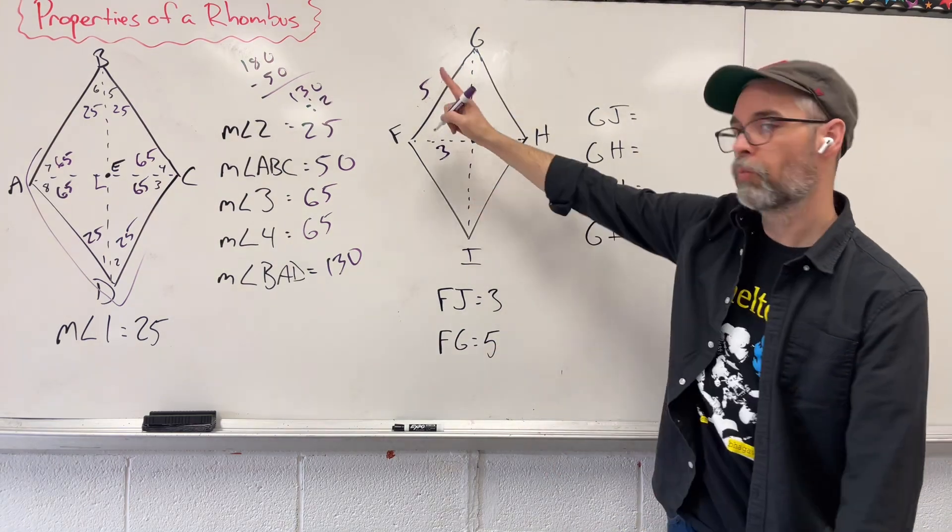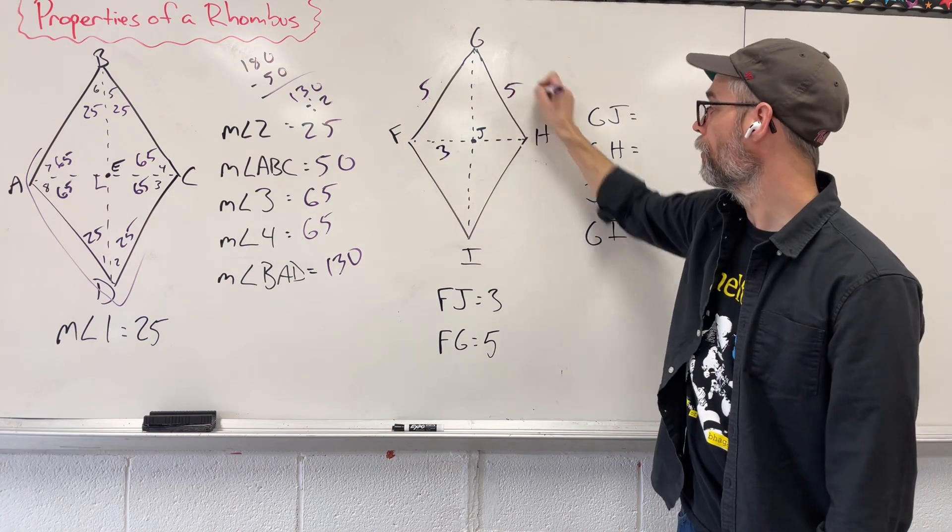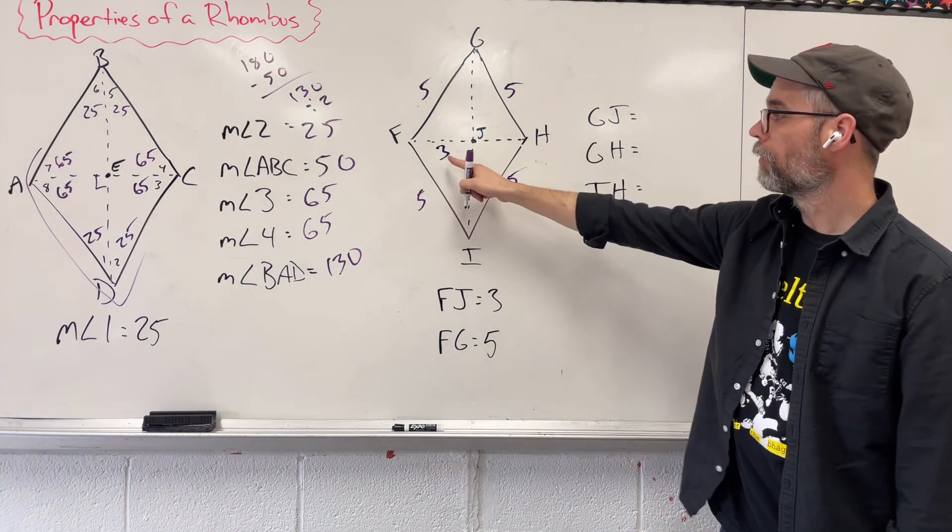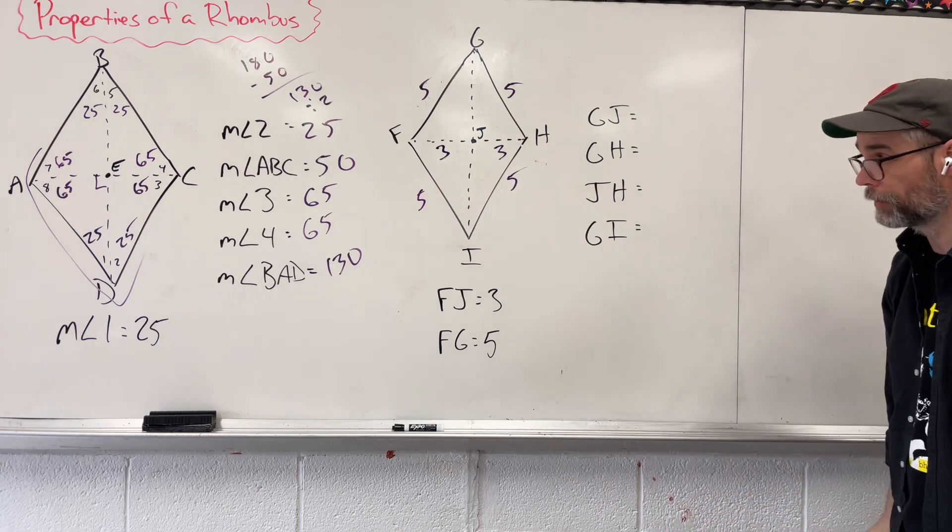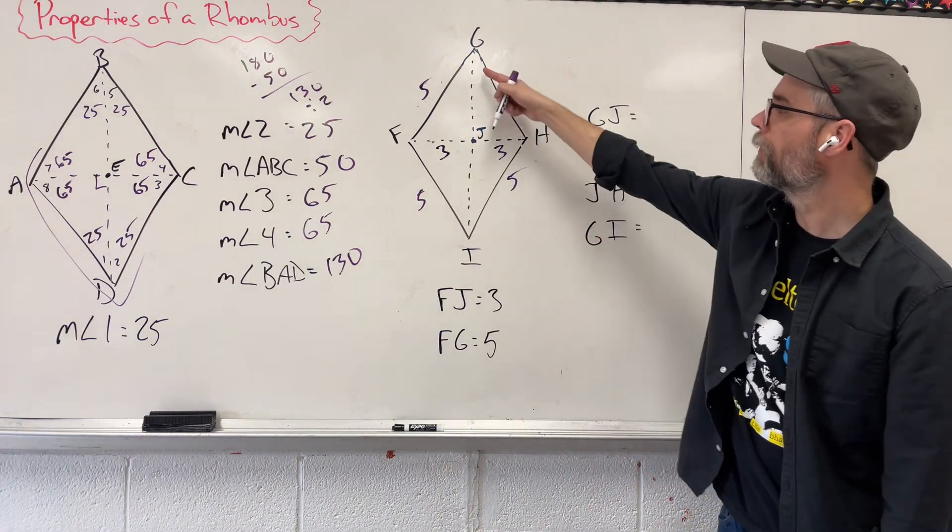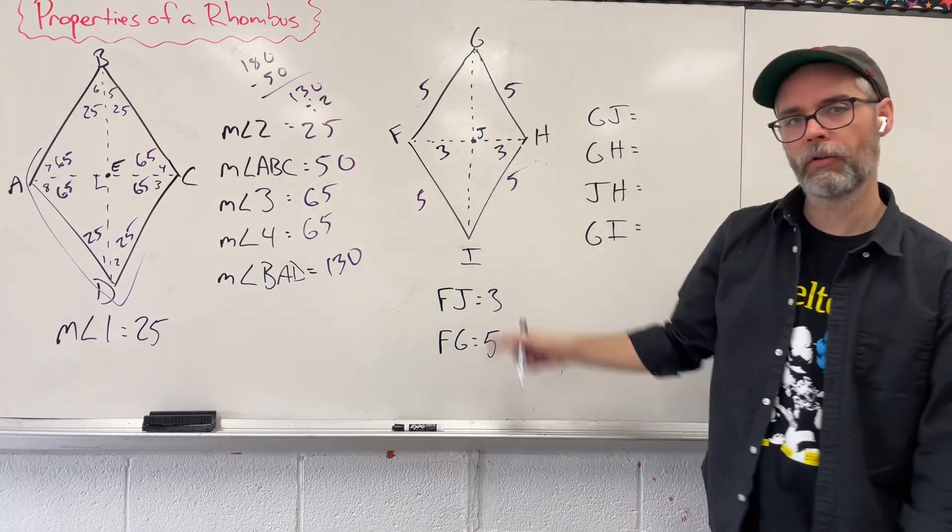I know that if one side is 5, all sides are going to be 5. I know if this half of the diagonal is 3, this half also has to be 3. Now we need to figure out this last diagonal, the vertical one here.